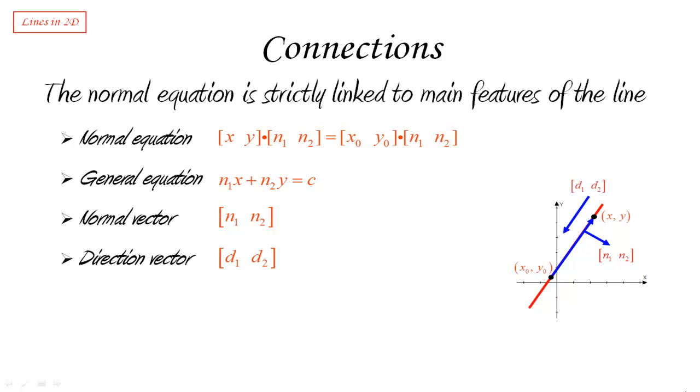This is what we call a direction vector. And of course, it's going to be any multiple of the vector that we obtain by taking the normal n1 and n2, switching the two components and changing the sign of one of them. You may remember this is the trick that we use to construct a vector perpendicular to a given vector.